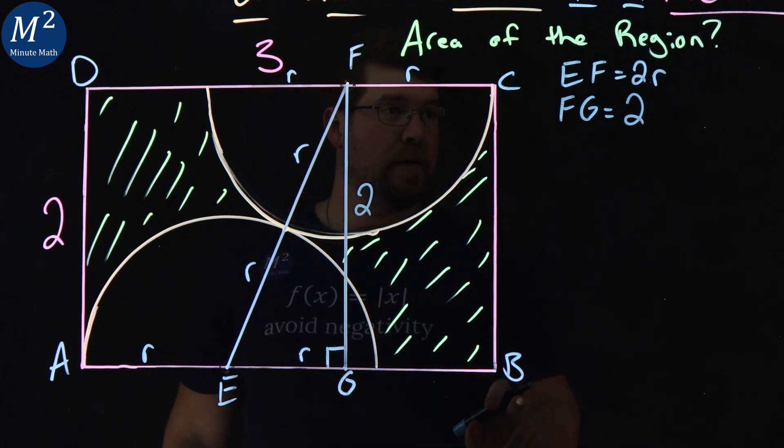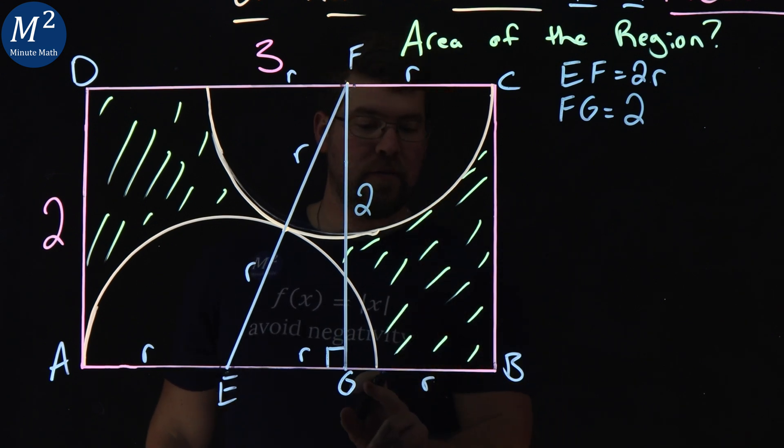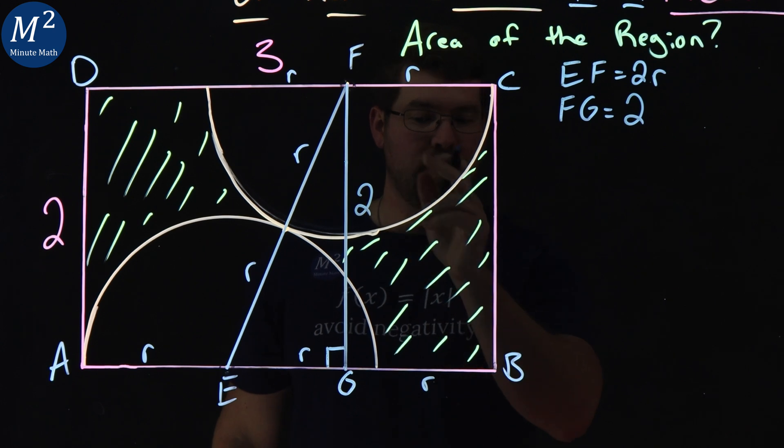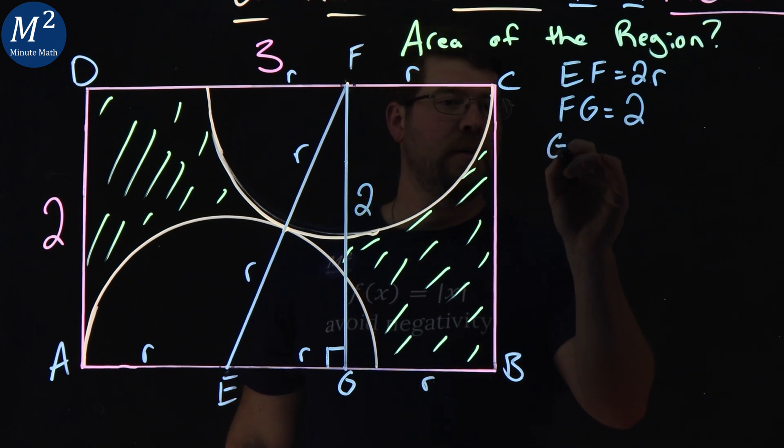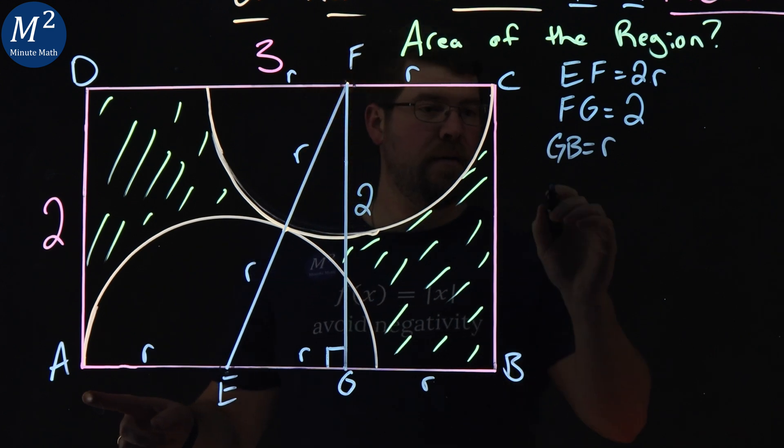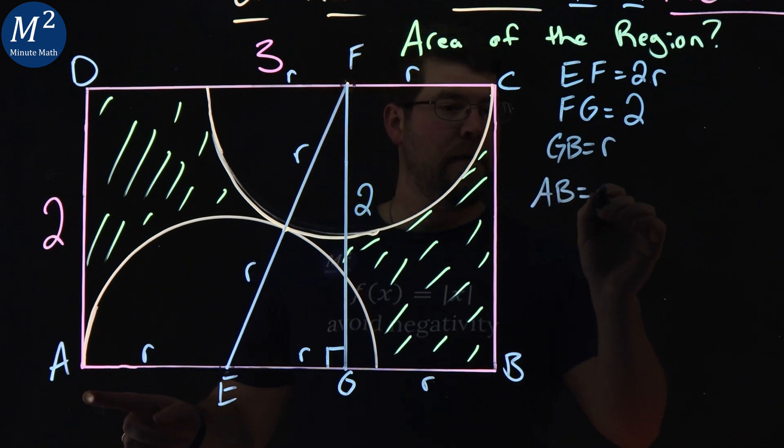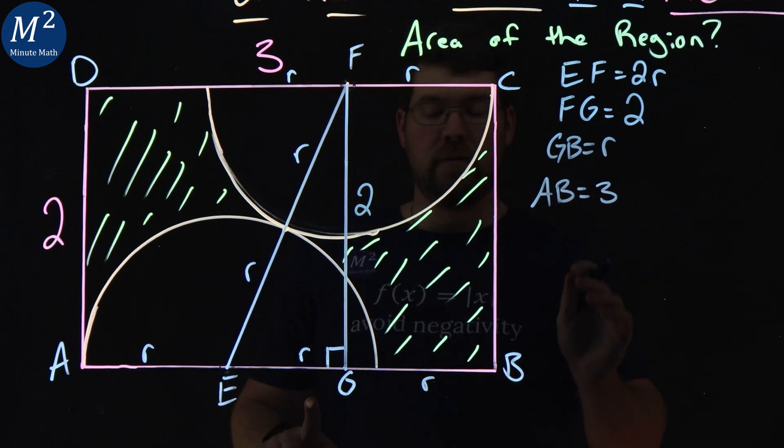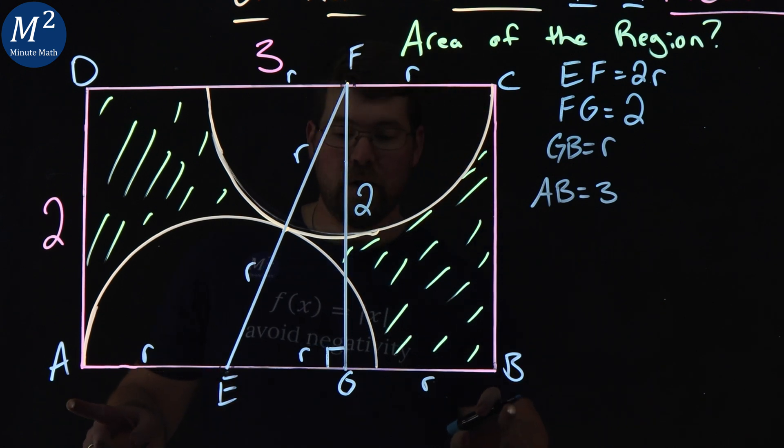How do I find the length of EG? Well, GB also has a length of R from up here. That's our length of our radius of the circle. So GB equals R. AB equals 3, right? AB equals 3.